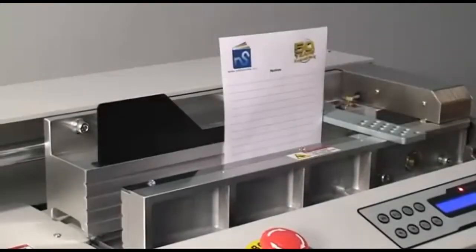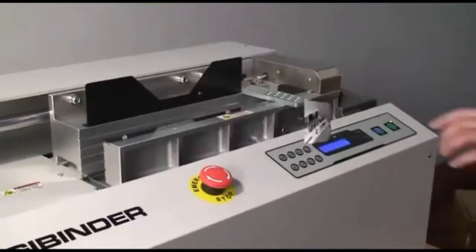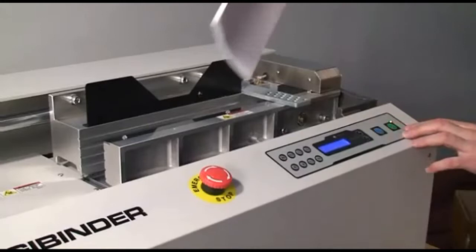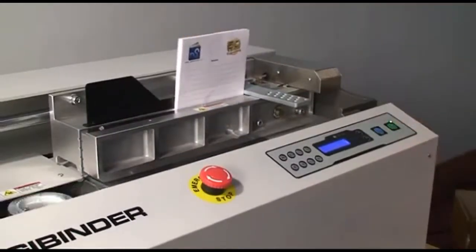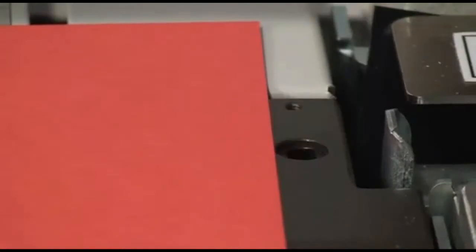Also, there are some new safeties. The clamp has a sensor that will stop the machine if it senses a human hand. There is an electric eye inside the clamp so that you can't cycle the machine unless it senses paper. There is also an electric eye so that you don't forget to put a cover down prior to cycling the machine.